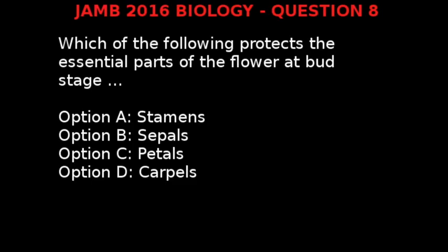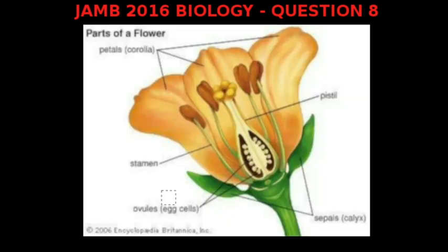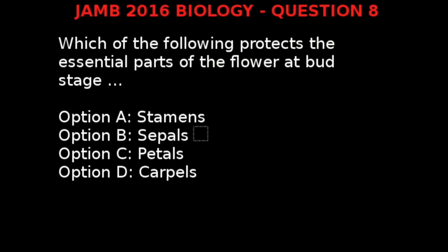JAM 2016 Biology Question 8. Which of the following protects the essential parts of the flower at the bud stage? Option A: Stamens. Option B: Sepals. Option C: Petals. Option D: Carpels. From a diagram of a flower, the protective part is the sepals — the outermost flower part that encloses a bud before it opens. Therefore, our correct answer is Option B, Sepals.